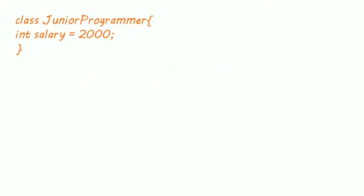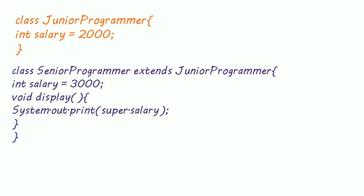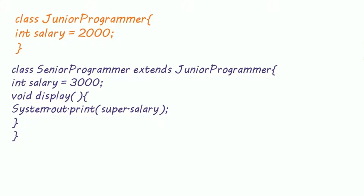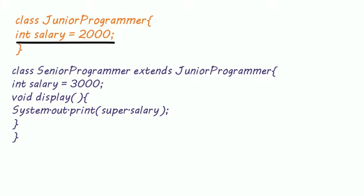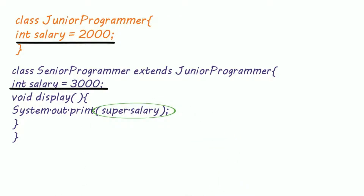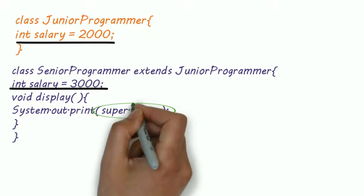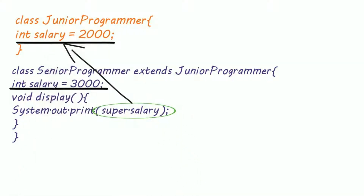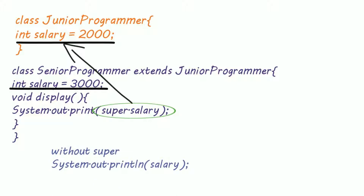Suppose I created two classes: JuniorProgrammer and SeniorProgrammer. SeniorProgrammer extends JuniorProgrammer, and both classes have a variable called salary — the salary of JuniorProgrammer is 2000 and of SeniorProgrammer is 3000. When I want to access the variable of the parent class, I use the super keyword. Inside the display method of SeniorProgrammer, super.salary refers to the salary variable in JuniorProgrammer, while plain salary refers to the variable inside SeniorProgrammer.